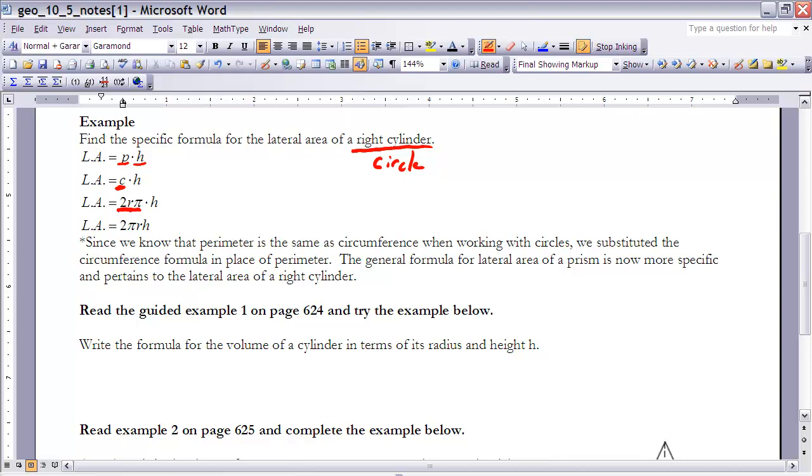Therefore, if I want to find the lateral area of that figure, what I'm going to do is I'm going to take 2 times pi times the radius times the height. And all I've done is substituted in what I know about a right cylinder, meaning its base is a circle. Therefore, 2 pi r would represent the circumference of that circle and h would be the height. Therefore, now I have a formula in terms of r and h.